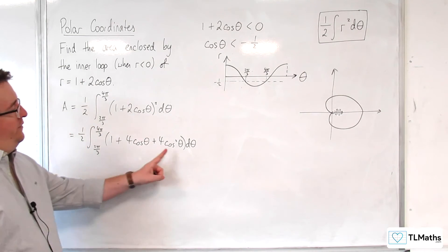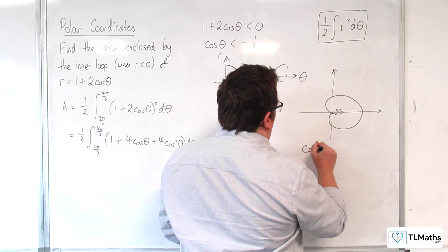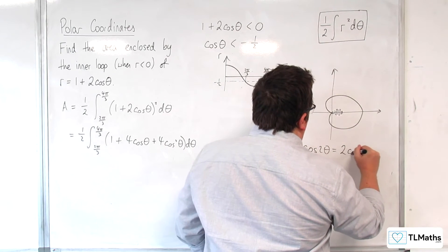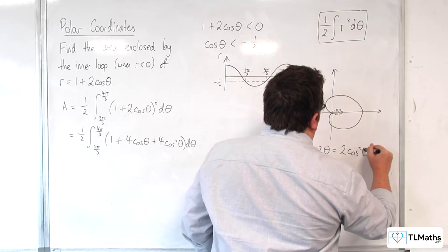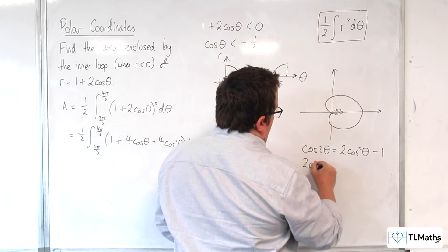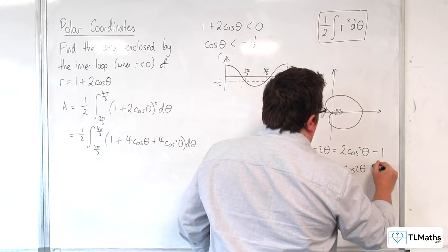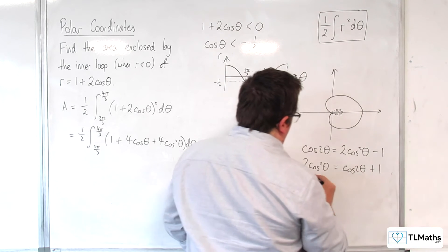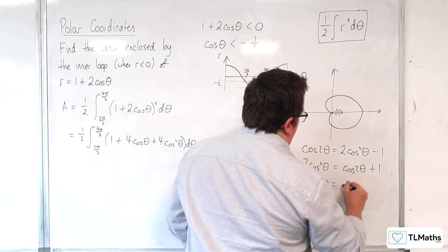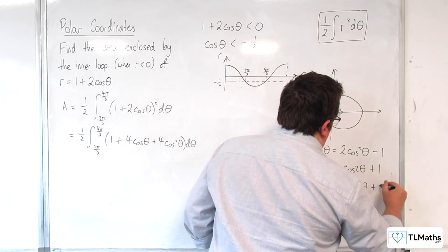In order to integrate the cosine squared, I'll use the double angle formula. Cosine 2θ equals 2 cosine squared θ minus 1, so 2 cosine squared θ equals cosine 2θ plus 1, which means 4 cosine squared θ equals 2 cosine 2θ plus 2.